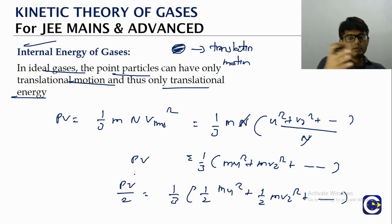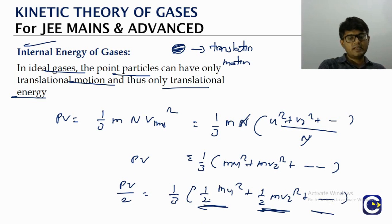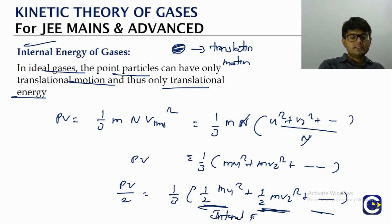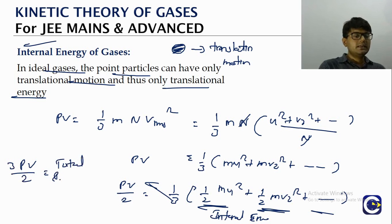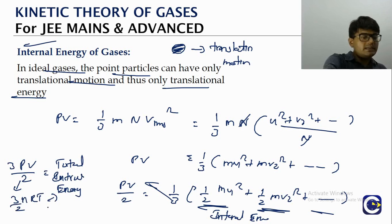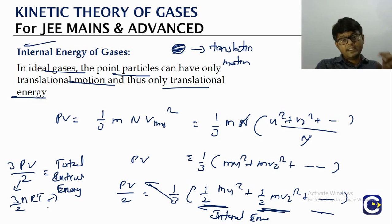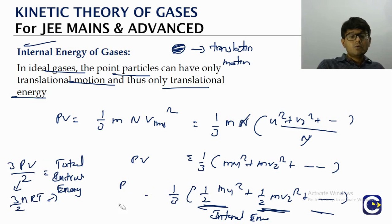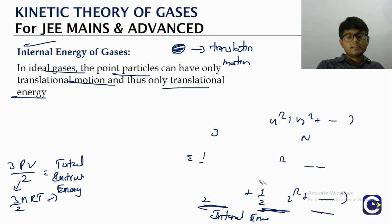Substituting PV = nRT: total internal energy U = (3/2)nRT for n moles of ideal gas. For one mole: U = (3/2)RT. For one molecule (dividing by Avogadro's number N_A): U = (3/2)kT, where k is Boltzmann's constant. This gives the translational kinetic energy of one ideal gas molecule.